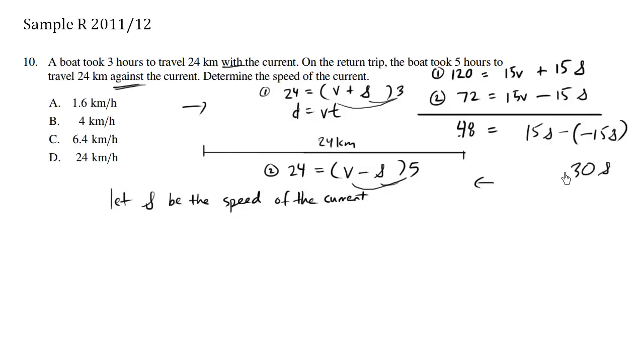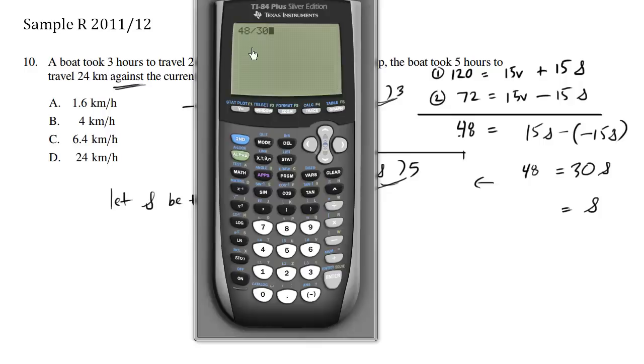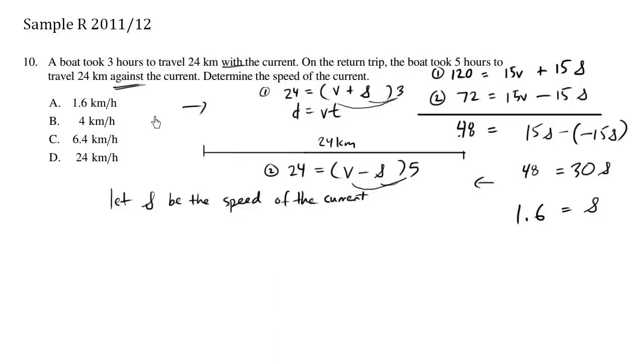So we have 30s equals 48. When I divide both sides by 30, we solve for s, which is what we wanted. So 48 divided by 30 equals 1.6. So we solved the speed of the current, which is 1.6 kilometers per hour, choice A.